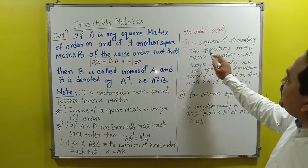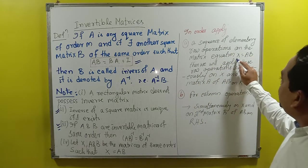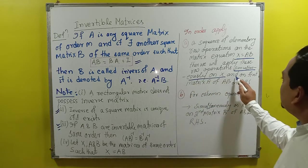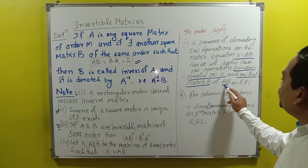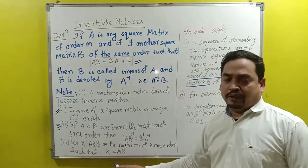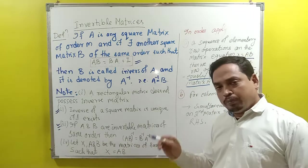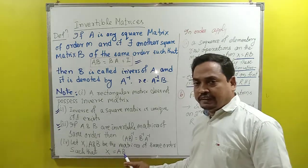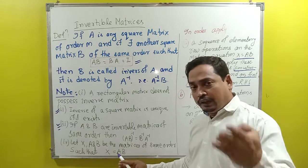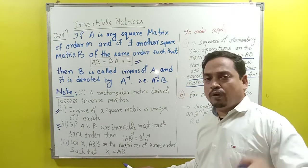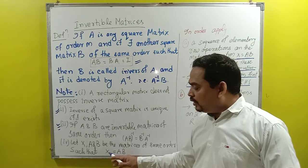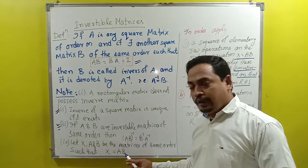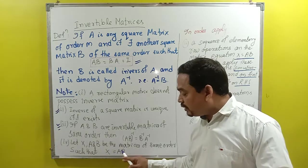If a sequence of elementary row operations is applied on matrix equation X = A·B, then these operations must be applied simultaneously on X and on the first matrix A of A·B on the RHS. For row operations, both sides are operated — on the left-hand side X, and on the first matrix A (not matrix B) of the right-hand side.